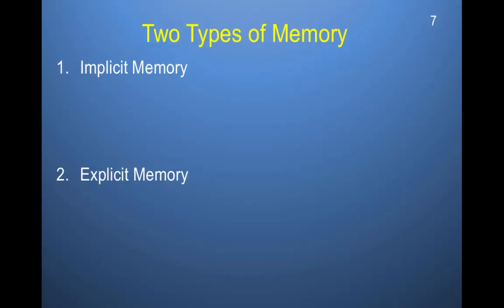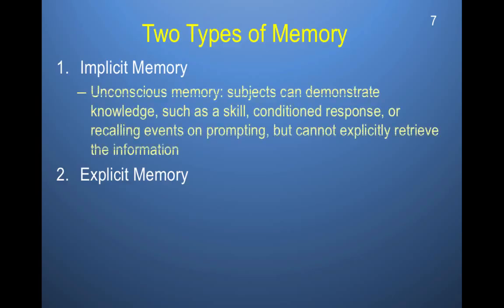We've now learned a little bit about learning and about memory, and we're going to delve more into memory. There are two types of memory: implicit memory and explicit memory. Implicit memory is unconscious memory. Subjects can demonstrate knowledge, such as a skill, conditioned response, or recalling events on prompting, but they cannot explicitly retrieve the information.